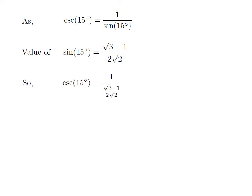Replacing the value of sine of 15 degrees in the above expression of cosecant of 15 degrees, we get cosecant of 15 degrees is equal to 1 upon square root of 3 minus 1, upon 2 into square root of 2. As 1 upon a fraction is equal to the reciprocal of the fraction, so cosecant of 15 degrees is equal to 2 into square root of 2, upon square root of 3 minus 1.